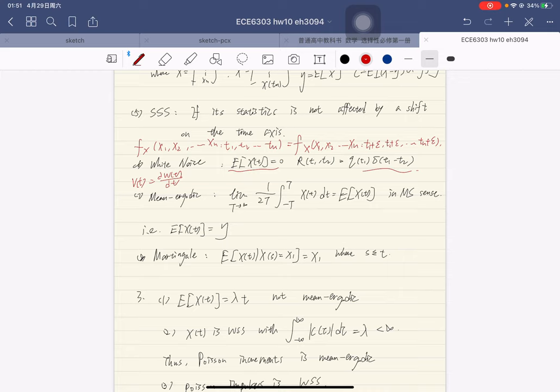The next is mean-ergodic process. A stochastic process is said to be mean-ergodic if the limit of 1 over 2T integral from minus T to T of X(t) dt equals to the expectation of the process in mean square sense. This represents one kind of consistency. There are others in probability, with probability 1, and etc.